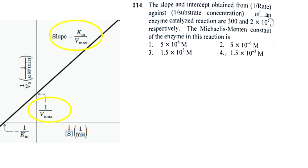Let's go to our question. Here they are giving the slope and intercept. Let us write: intercept = 1/Vmax = 2×10^5 as seen here, and slope = Km/Vmax = 300.